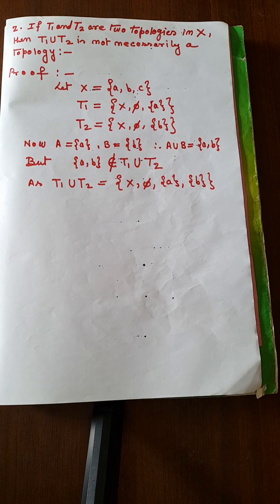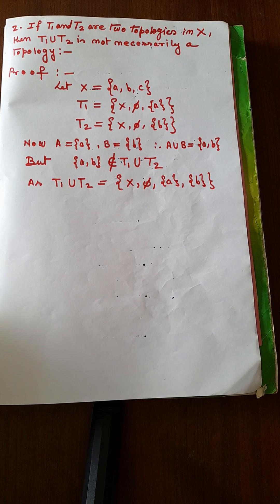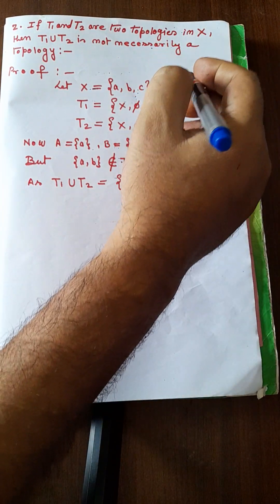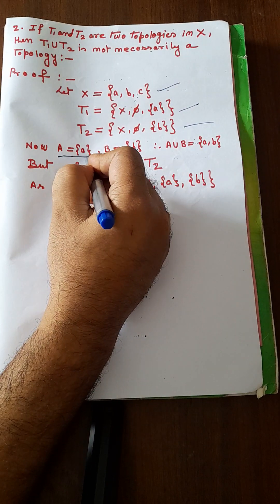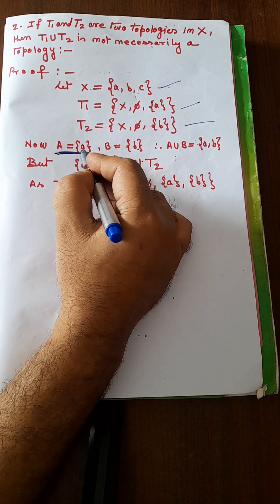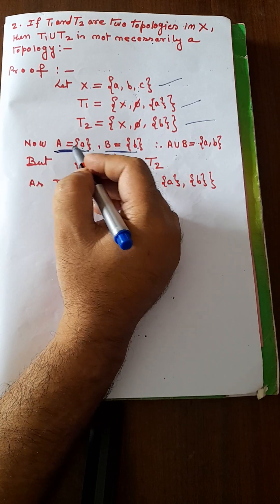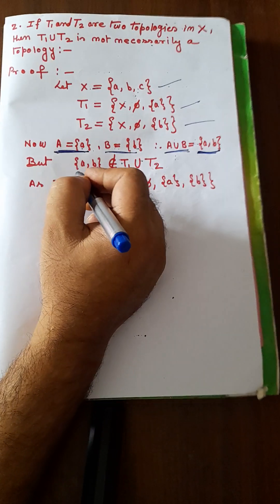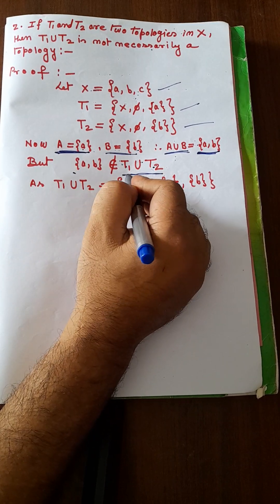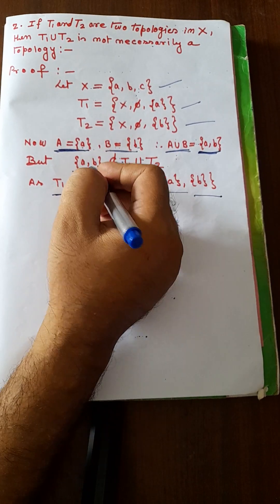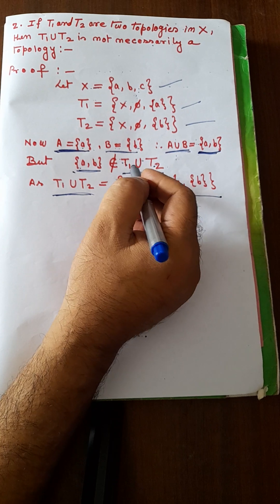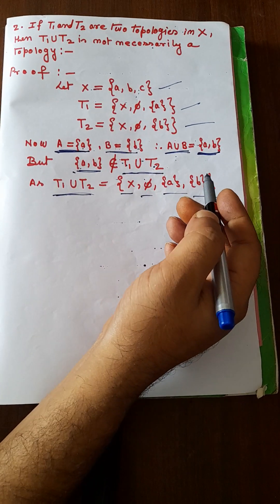The second theorem: if T1 and T2 are two topologies on X, then T1∪T2 is not necessarily a topology. To prove this, let X = {a, b, c}, T1 = {X, φ, {a}}, and T2 = {X, φ, {b}}. If we take A = {a} and B = {b}, then A∪B = {a,b}. But {a,b} does not belong to T1∪T2 — T1∪T2 only gives {X, φ, {a}, {b}}. So the union axiom is not satisfied.